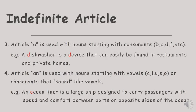Is there any difference between the use of a and an? Article a is used with nouns starting with consonants, like b, c, d, f, and so on. Kata sandang a itu digunakan dengan kata benda yang berawalan huruf konsonan. See the example: A dishwasher is a device that can easily be found in restaurants and private homes. Kata dishwasher berawalan d, maka kata sandang yang digunakan adalah a. Device juga berawalan d, maka menggunakan kata sandang a.